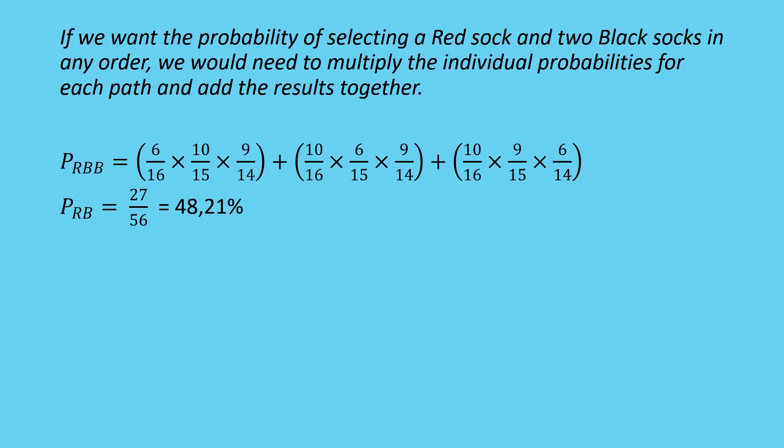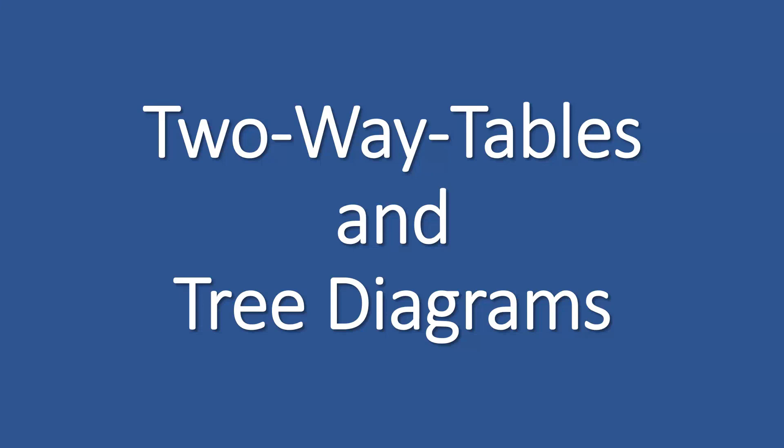To recap: two-way tables and tree diagrams are both used for multiple events. Two-way tables are used when you have two events to look at, while tree diagrams are used when there are three or more events. Two-way tables can be larger — for example, rolling two dice gives 36 outcomes — and tree diagrams can get complex too. Keep them to the simpler cases and you'll be fine. I hope that helps — stay safe, thank you.